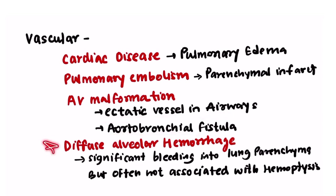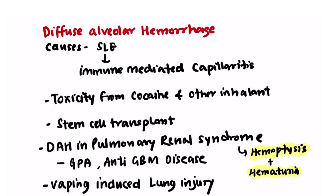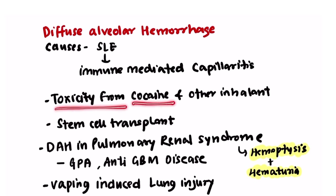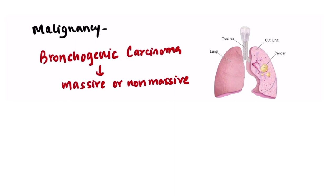An important point: diffuse alveolar hemorrhage, although associated with significant bleeding into the lung parenchyma, is often not associated with hemoptysis. Causes include systemic lupus erythematosus (immune-mediated capillaritis), cocaine and inhalant toxicity, and stem cell transplant. Diffuse alveolar hemorrhage is also part of pulmonary-renal syndrome caused by granulomatosis with polyangiitis and anti-GBM disease, presenting with hemoptysis plus hematuria. A newer cause is vaping-induced lung injury.